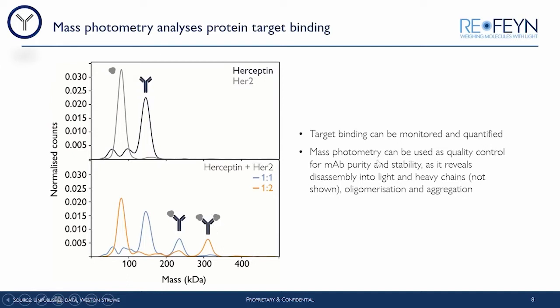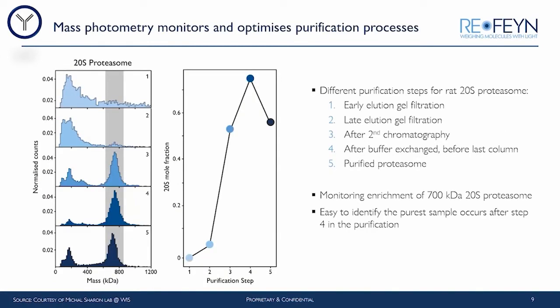Mass photometry can be used as a quality control tool — we can look at monoclonal antibody purity and stability, and assess oligomerization and aggregation. In addition, we can use it to monitor and optimize purification processes. Here we're looking at the 700 kilodalton rat proteasome. As we move through gel filtration and chromatography stages, we can see the progressive enrichment of the 700 kilodalton rat proteasome, and then determine that step four gives us the purest sample.